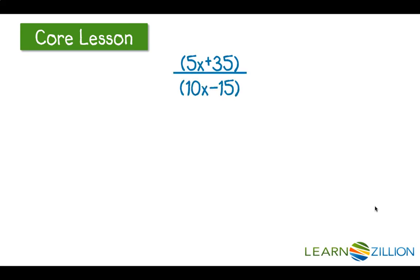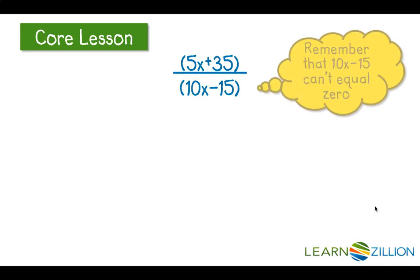We want to see a fraction as AB divided by AC. If we see this, then that means we can identify a common factor, A, and then rewrite the expression in the equivalent form, B over C. Right here, I can immediately see a common factor, and that common factor is 5. Remember that 10x minus 15 can't equal 0.